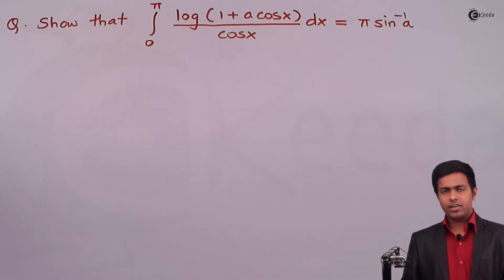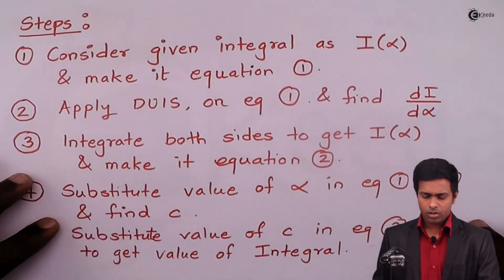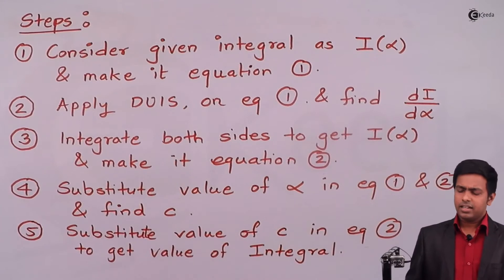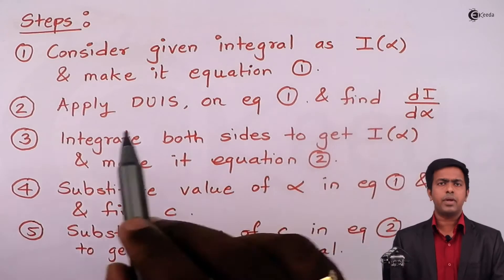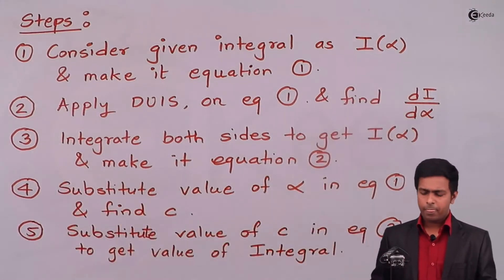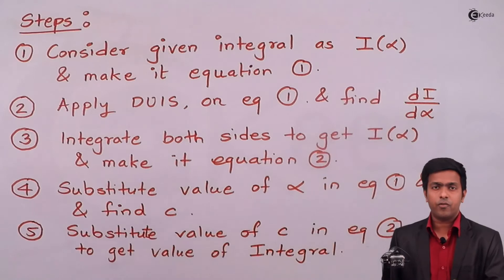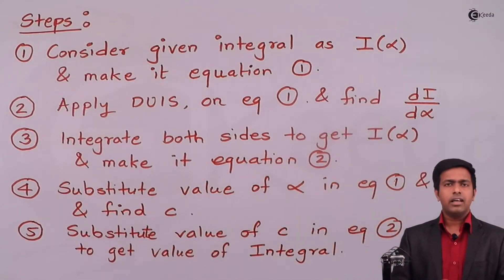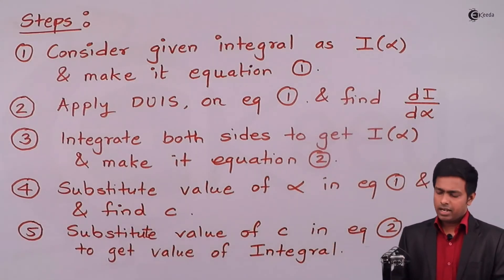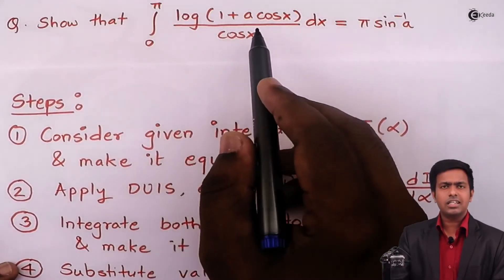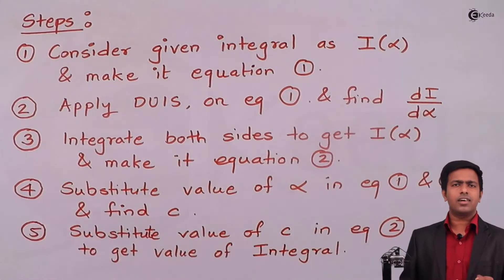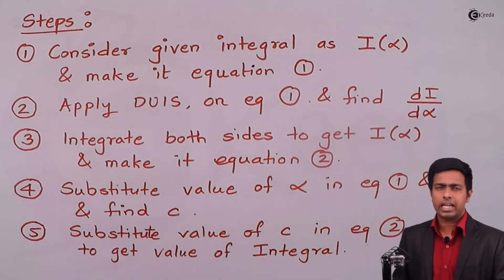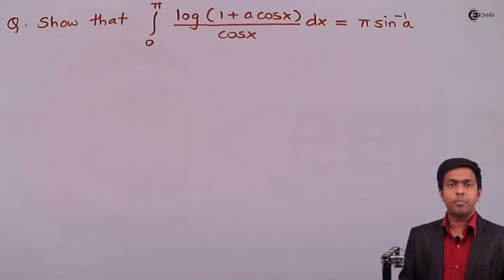Step number one says that we have to consider the given integral as I(α) and make it equation number one. We don't have to say I(α) every time because α is the parameter. In our question, a is the parameter, so instead of I(α) I'll be calling it I(a), and I'll make it equation number one.